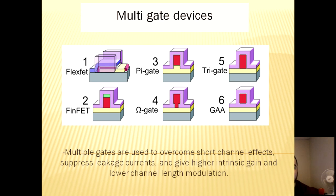One method commonly used to overcome short channel effects and leakage current is multiple gate devices. These devices also give higher intrinsic gain and lower channel length modulation, making them a very attractive topic for modern semiconductor manufacturers. Some examples of multi-gate devices are the FlexFET, PiGate, Trigate, FinFET, OmegaGate, and the gate all-around transistor.